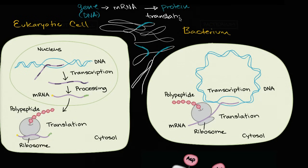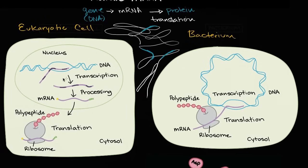This process is called translation, because we're literally translating that information into a polypeptide sequence. This is all review — we covered a lot of this in the video on transcription and the overview video on transcription and translation. If you look at a eukaryotic cell and a prokaryotic cell, it's analogous — you just don't have the nuclear membrane, and you're not going to do the processing step.